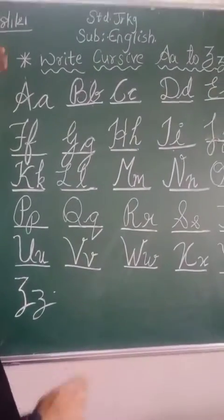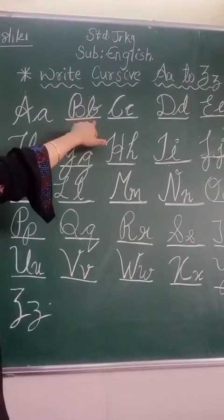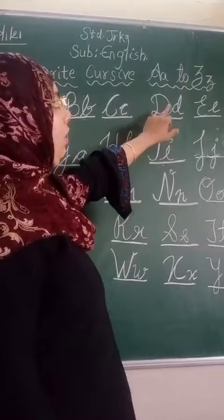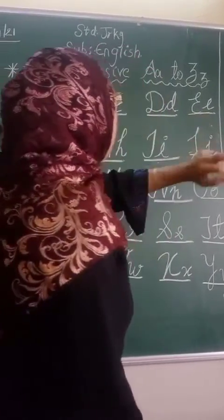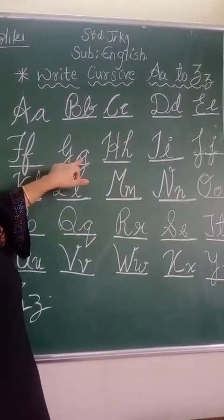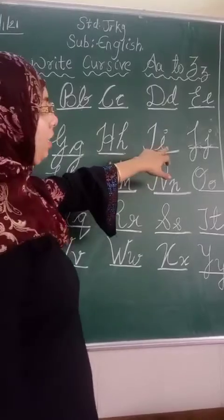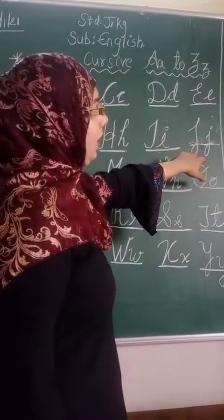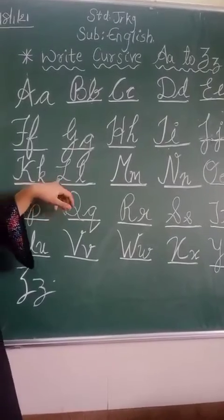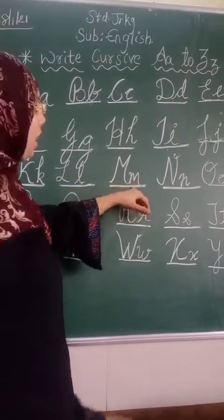Let's read with me. A, small a. B, small b. C, small c. D, small d. E, small e. F, small f. G, small g. H, small h. I, small i. J, small j. K, small k. L, small l. M, small m.